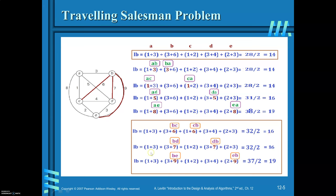From B, if you decide to go to C the lower bound is 16. If you decide to go to D, then B to D is 7. Including that edge also requires D to B, which creates an increase of 1 unit plus 3, totaling an increase of 4. Add 4: 32 divided by 2 is 16.